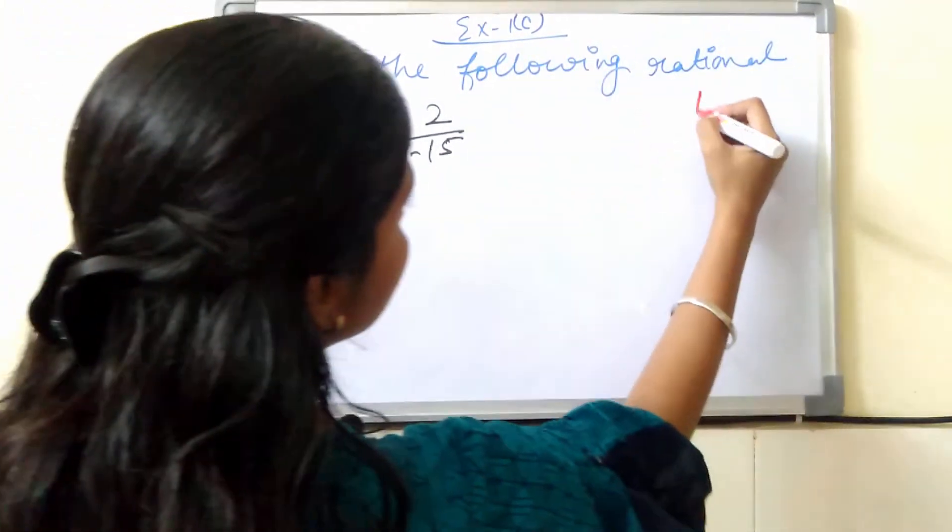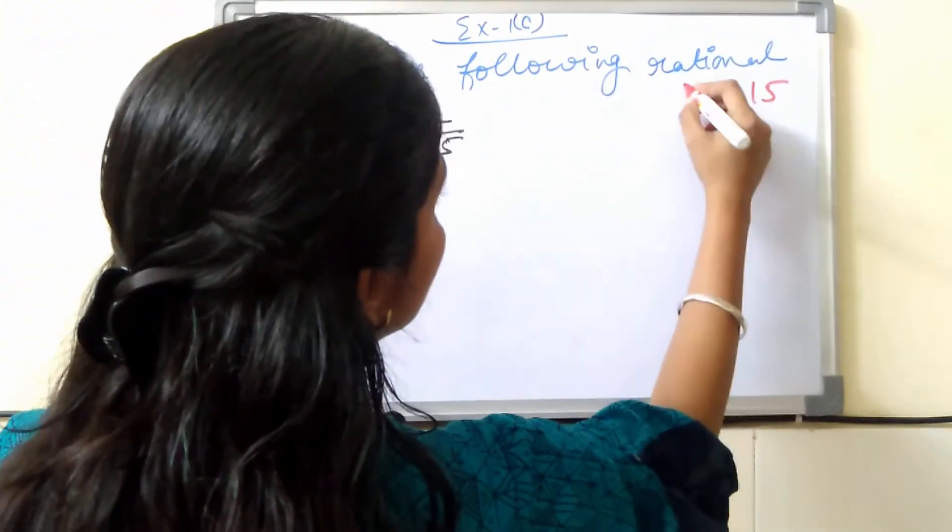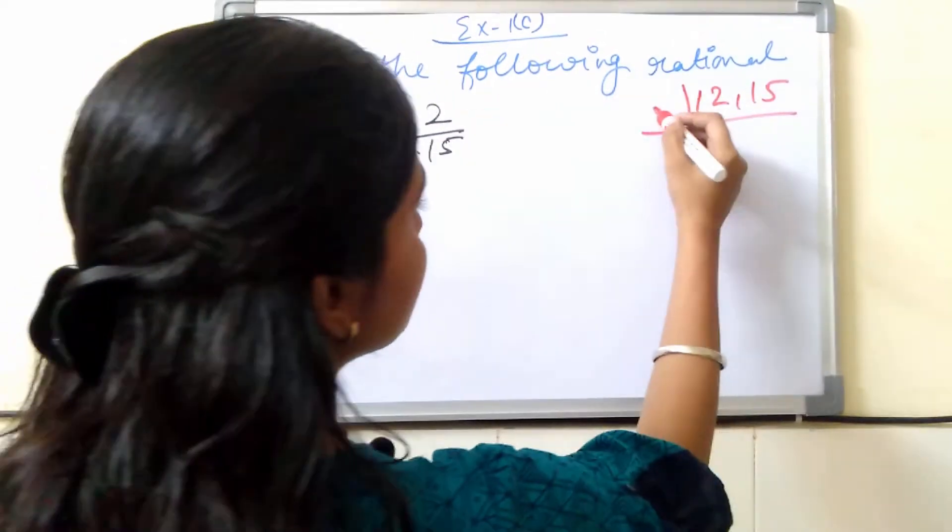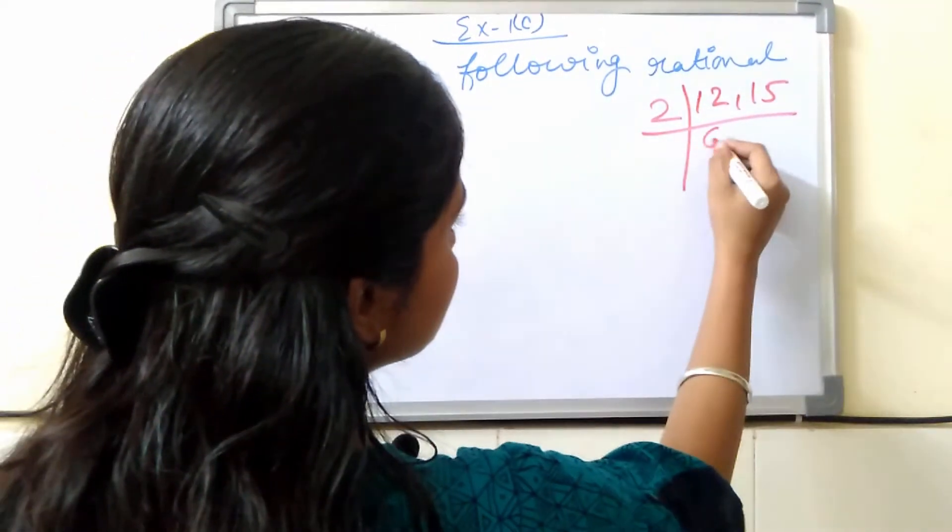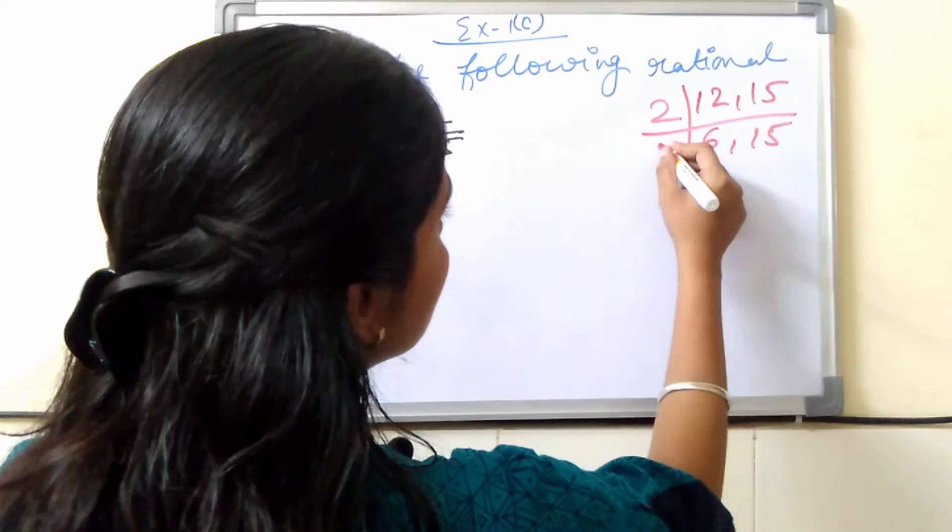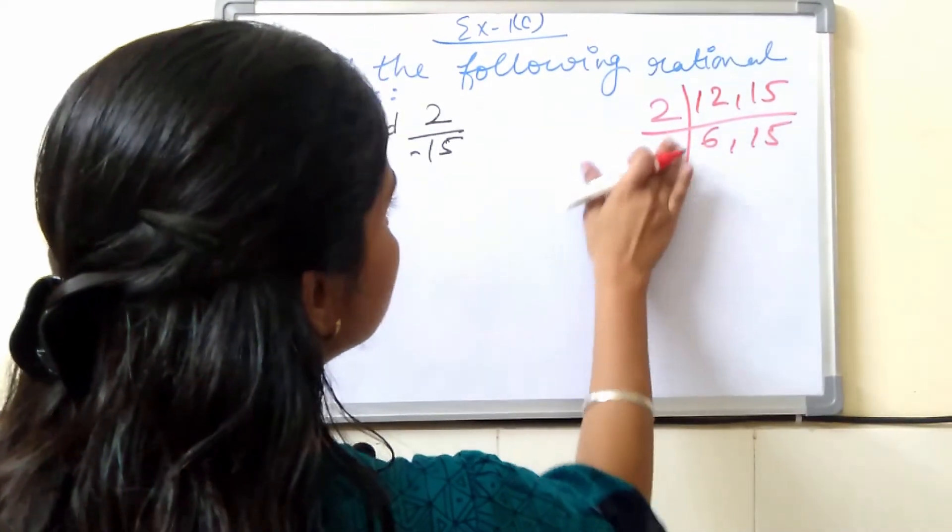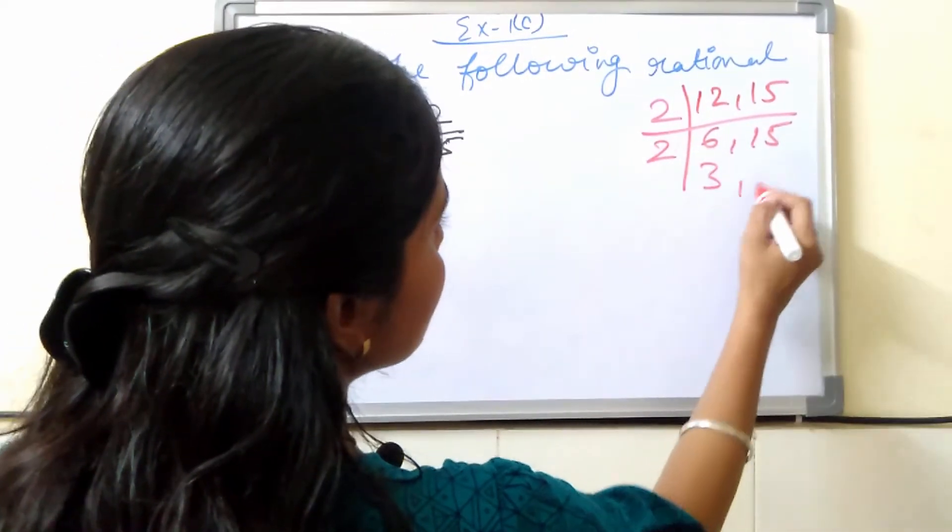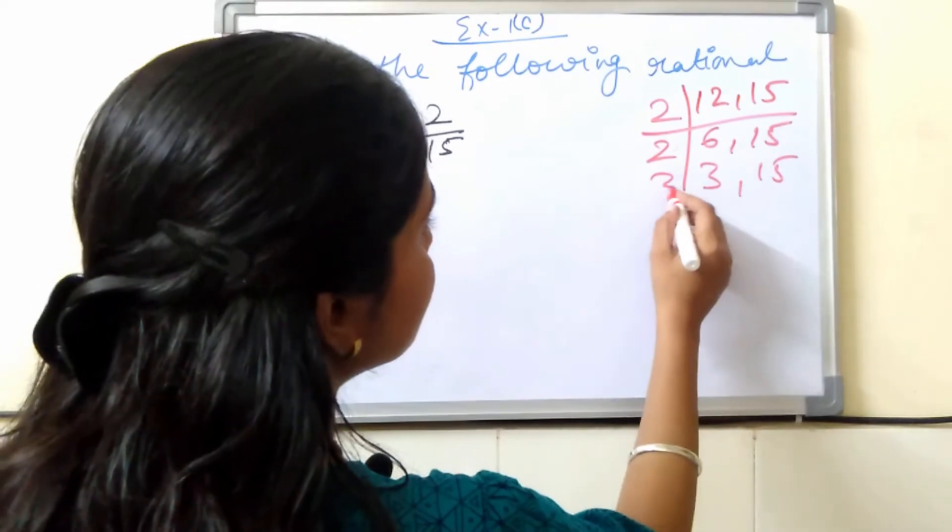So, let's take 12 and 15. Let's divide from the smallest number 2. 2, 6, 12. 15 as it is. Then, you can divide it by 2 again. 2, 3, 6. 15 as it is. Now, it will go from 3.